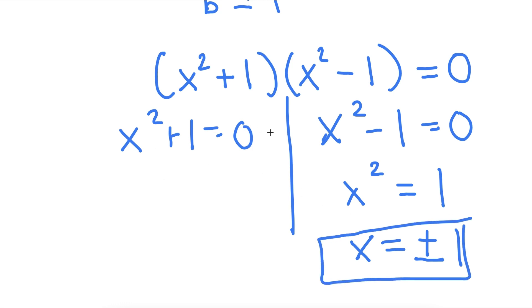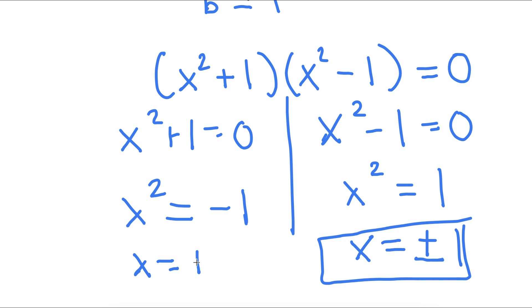For x squared plus 1 equals 0, I get x squared equals negative 1, meaning x equals positive or negative i.